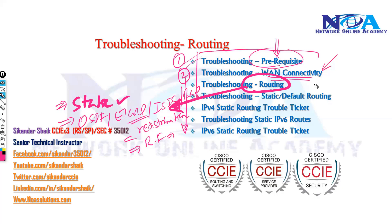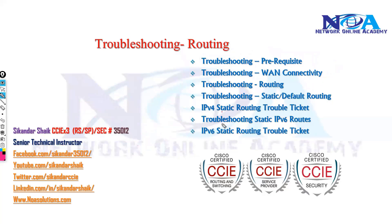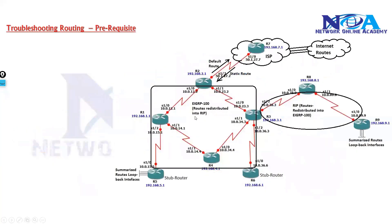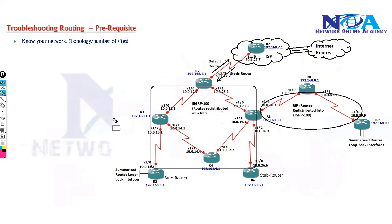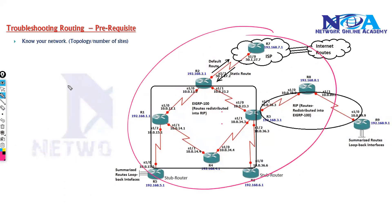These are the three prerequisite things you need to know. Prerequisites are things you need to know before you start troubleshooting anything. The first thing you need to know is your network, because whenever you decide to troubleshoot, if you don't know your network then you don't know where to start — and that's a problem.